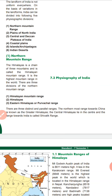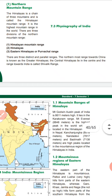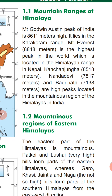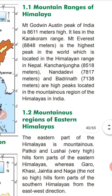Regarding the mountain peaks: Mount Godwin Austin, the highest peak of India, is 8,611 meters high and is located in the Karakoram Range. Mount Everest is the highest peak in the world, located in the Himalayan Range near Nepal. Kanchenjunga is 8,518 meters, Nanda Devi is 7,817 meters, and Badrinath is 7,138 meters high.